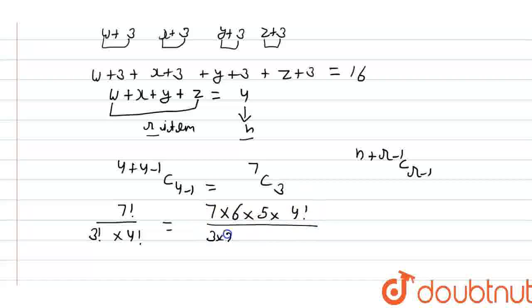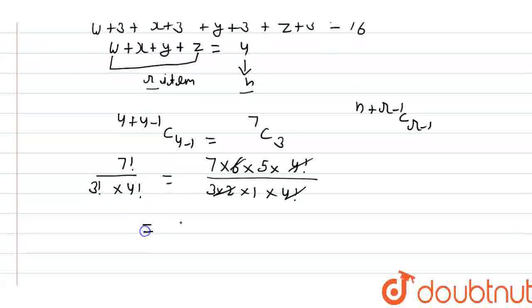And 3 into 2 into 1 into factorial 4. Factorial 4 will be cancelled out. 3 into 2, 6 is also cancelled out. So from here, we got 35.